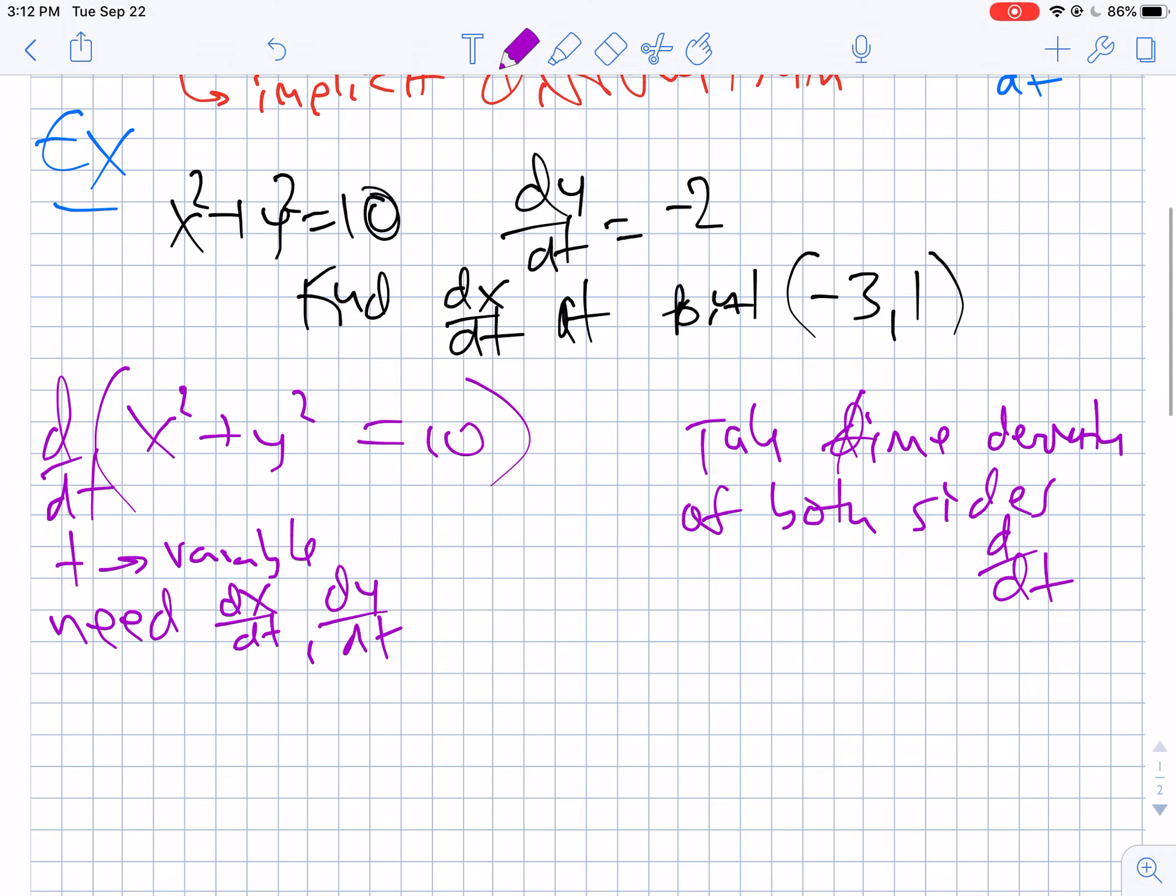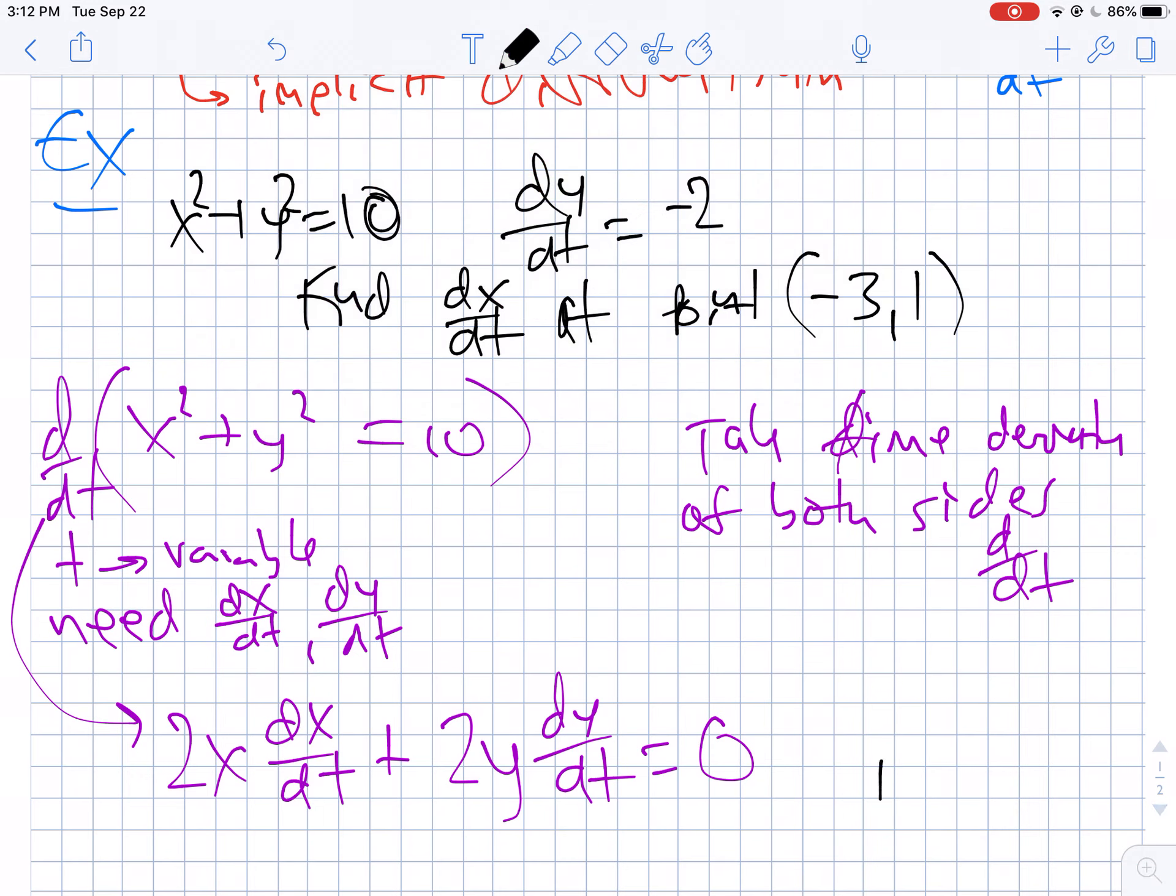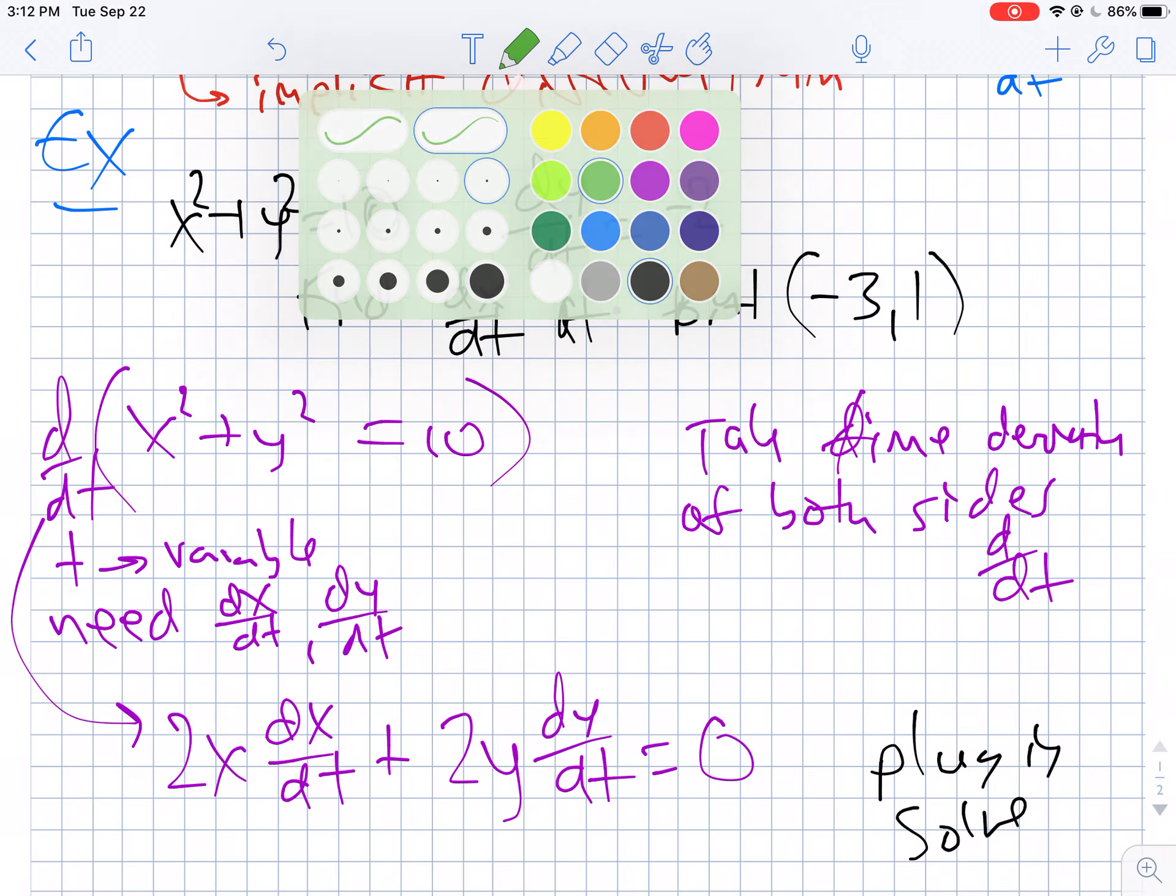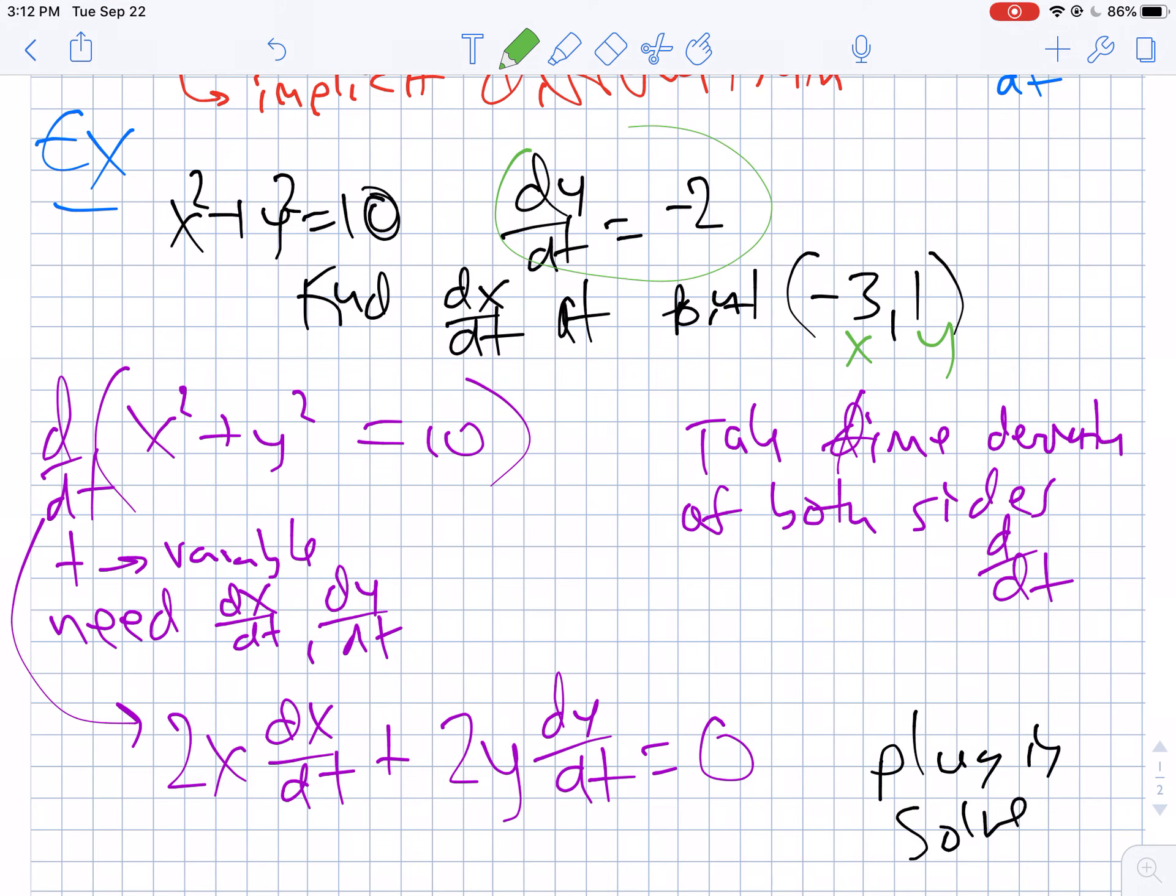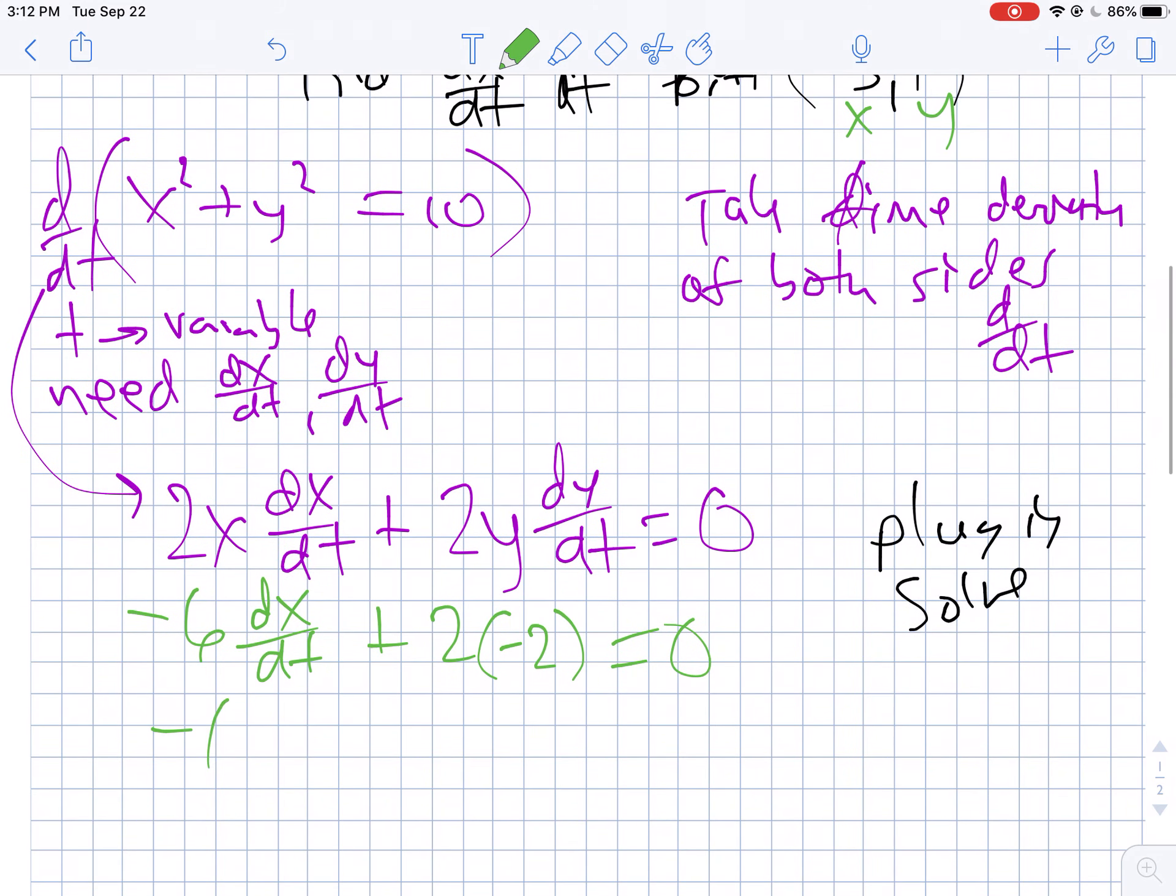When you take the derivative of x², you're going to have 2x times the derivative of x with respect to t, plus 2y times the derivative of y with respect to t. And of course, the derivative of 10 is 0. Now once you've taken the time derivatives of both sides, we're going to plug in and solve. We have (-3, 1), so that's our x and y, and dy/dt = -2. So we have -6(dx/dt) + 2(-2) = 0. We have a pretty easy problem to solve. -6(dx/dt) = 4, so dx/dt will be -2/3.